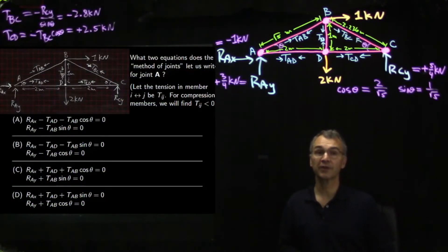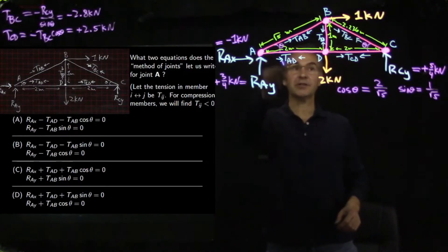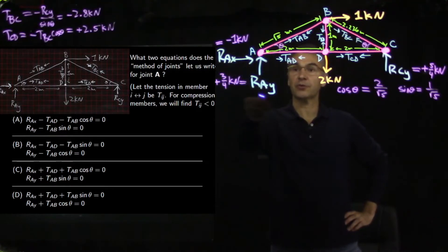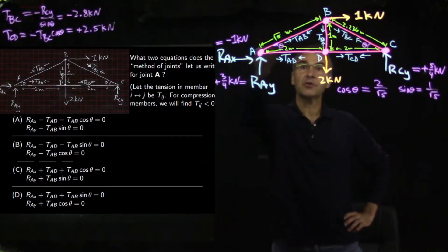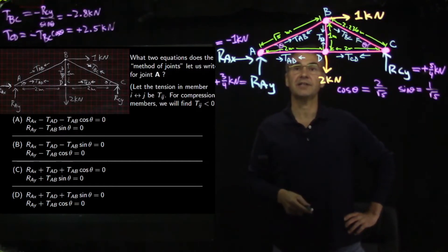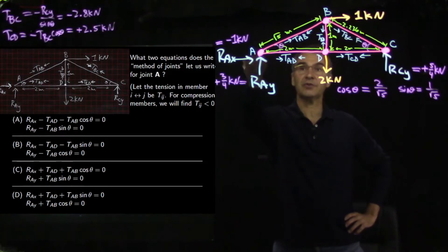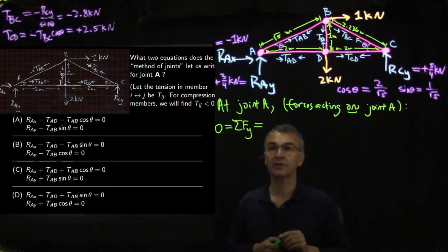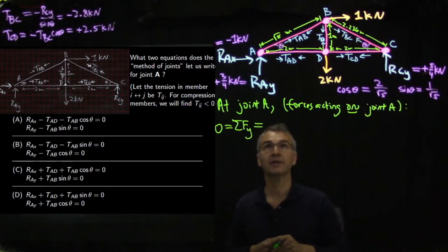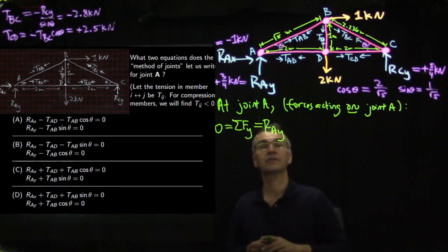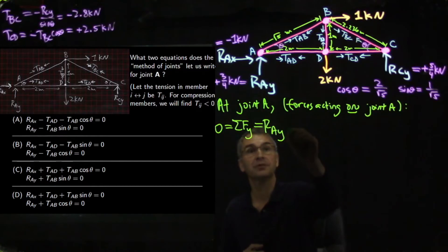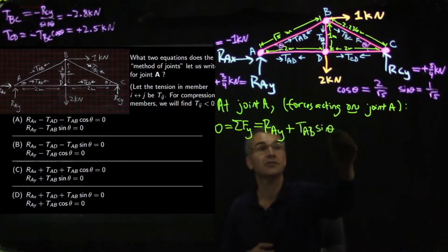What two equations does the method of joints let us write down for joint A? Joint A is a good choice because we already solved for R-A-X and R-A-Y, leaving only two unknown bar forces. Looking ahead, there's only one with a vertical component, so sum of forces in Y will directly solve for T-AB, and then sum of forces in X will directly solve for T-AD.